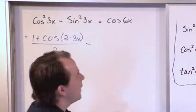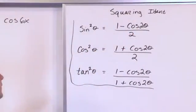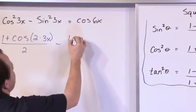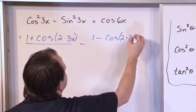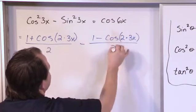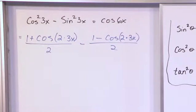And here we have a minus sign. And for the sine squared, it's 1 minus cosine of 2 times the angle. So it's 1 minus cosine of 2 times the angle, the angle being 3x again, and this is all again over 2.